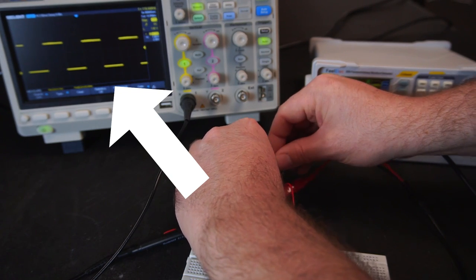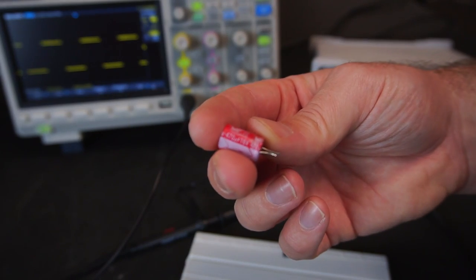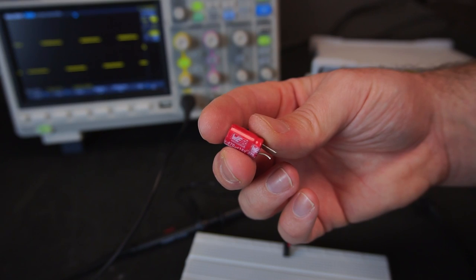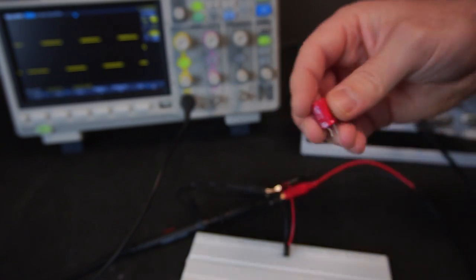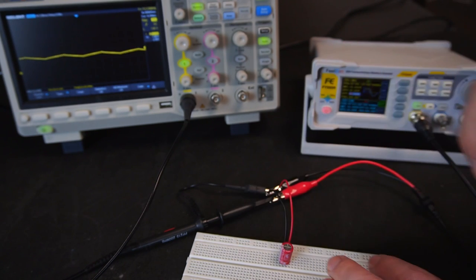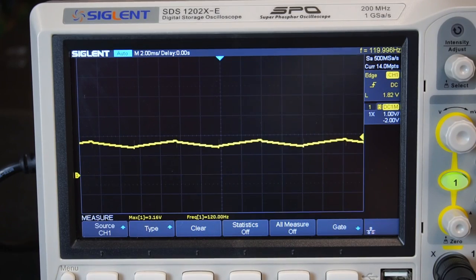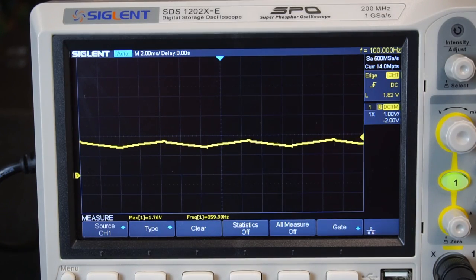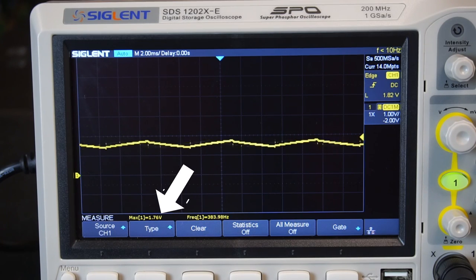You can see the scope is displaying a 50% duty cycle PWM signal just like before. Now I'll connect a 470 microfarad capacitor to the breadboard and let's see what happens. With the addition of the capacitor the PWM signal is filtered out, and notice the voltage has dropped to 1.7 volts.